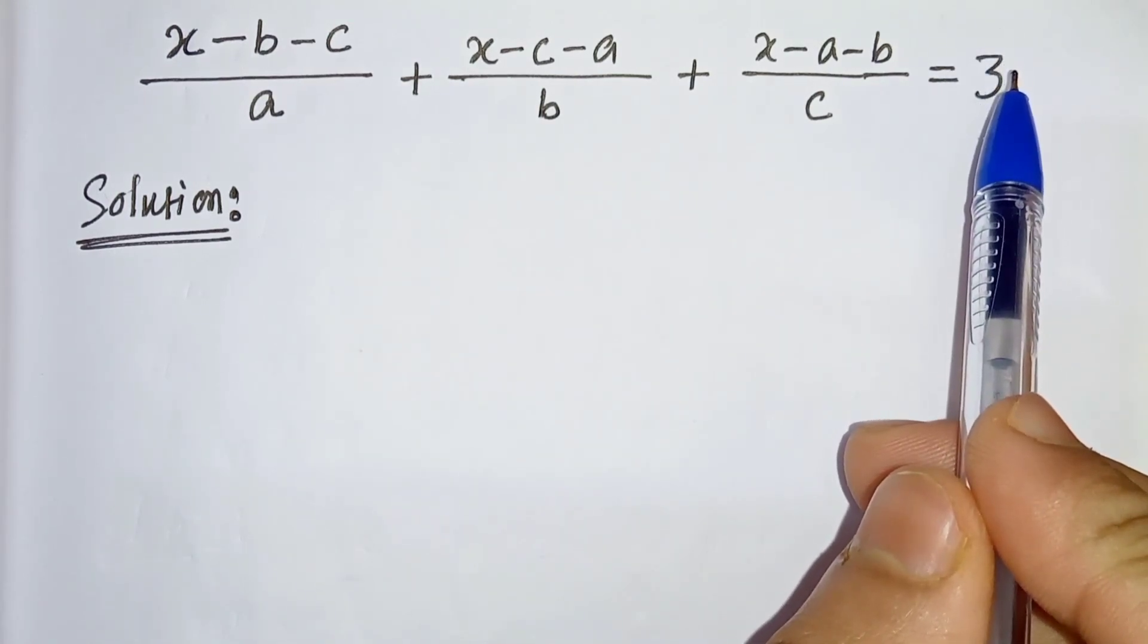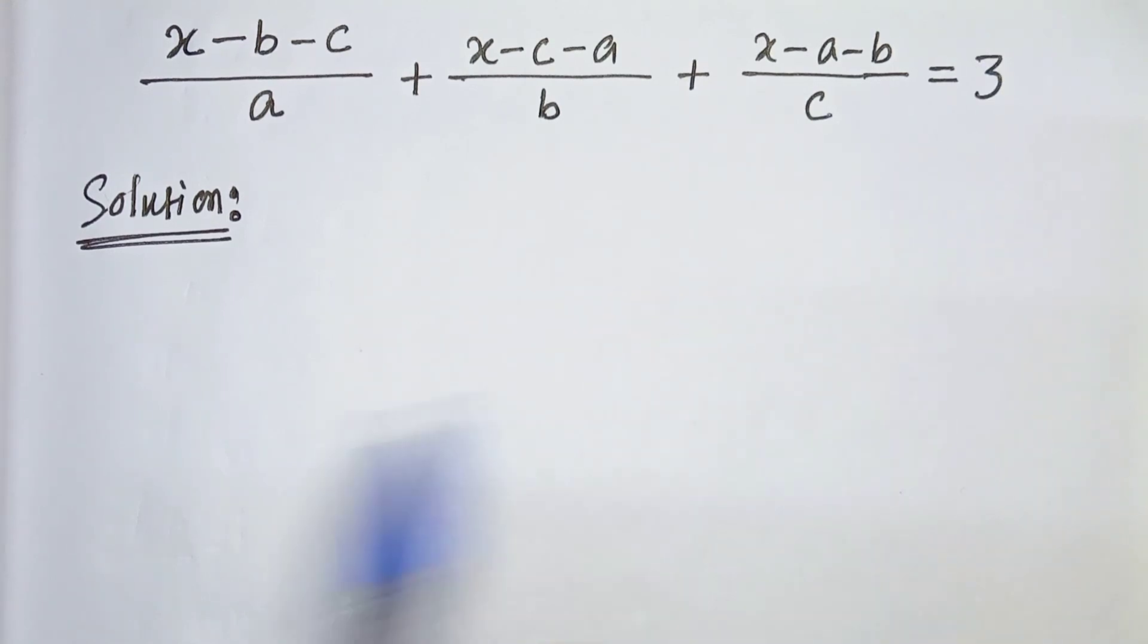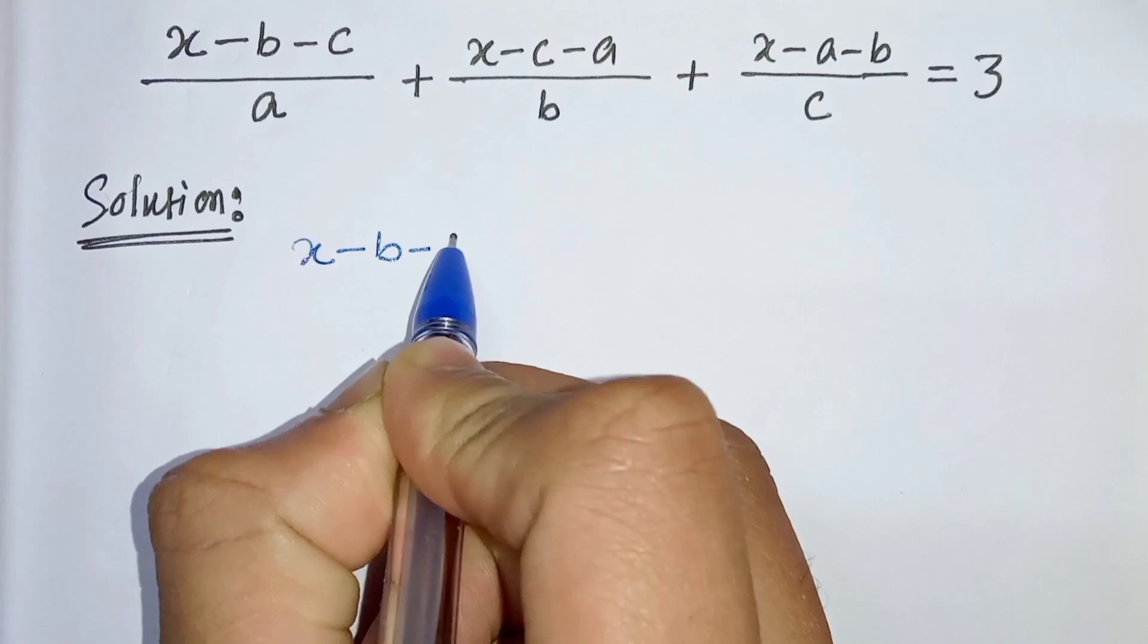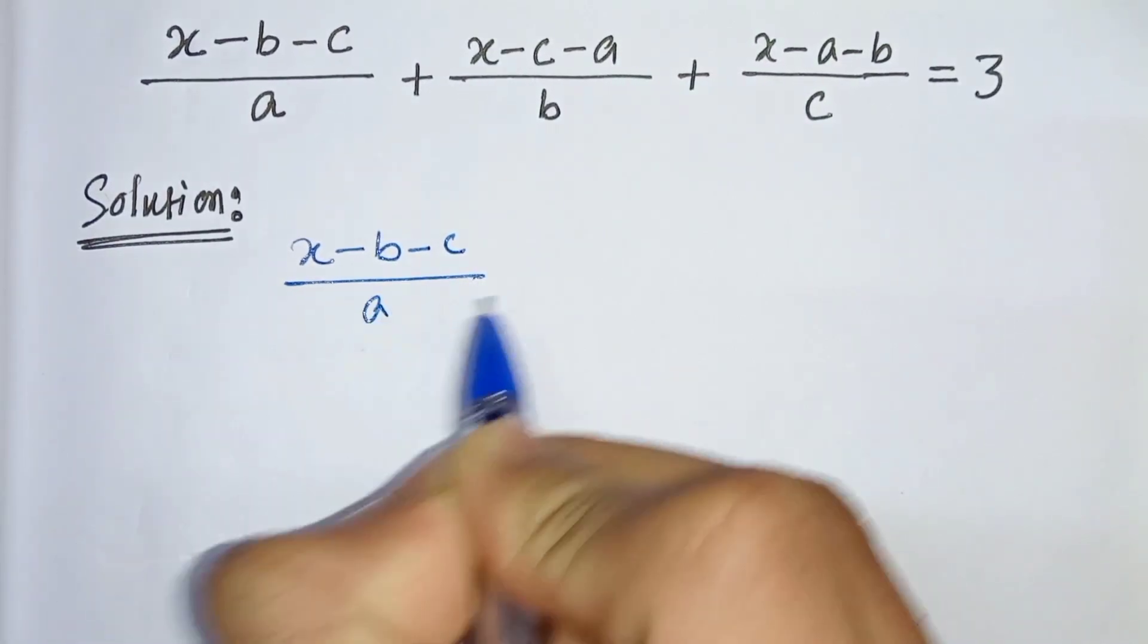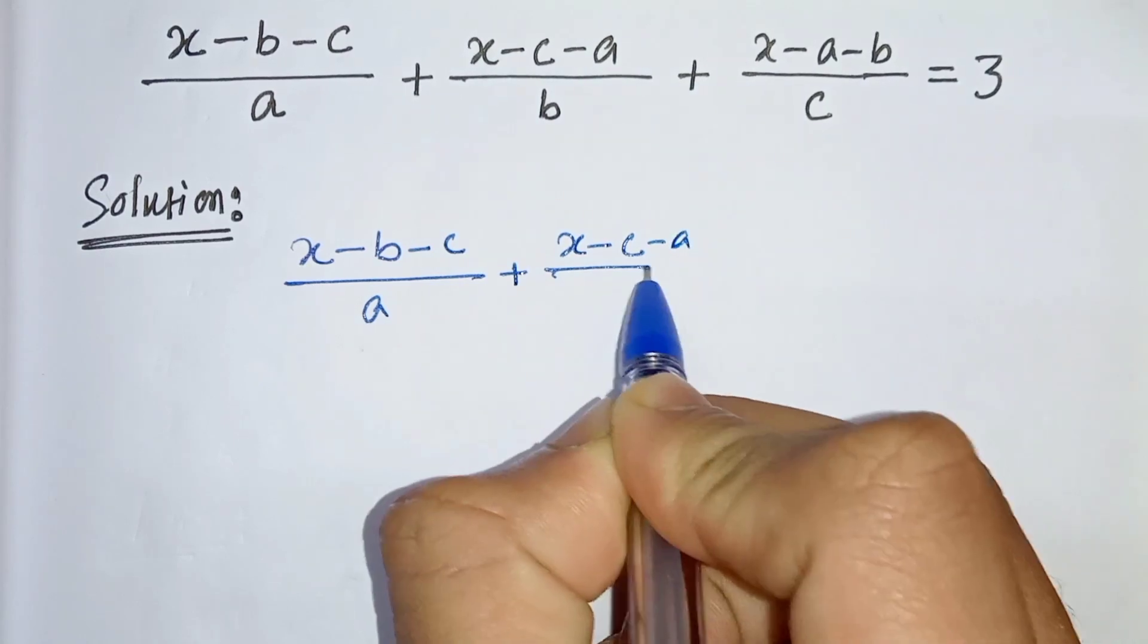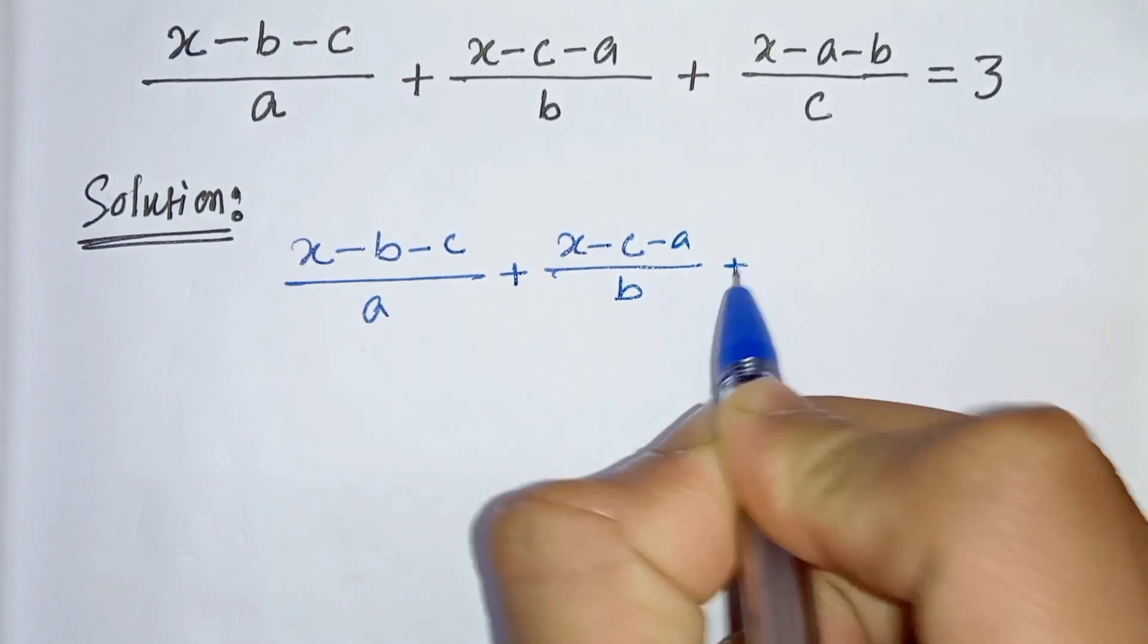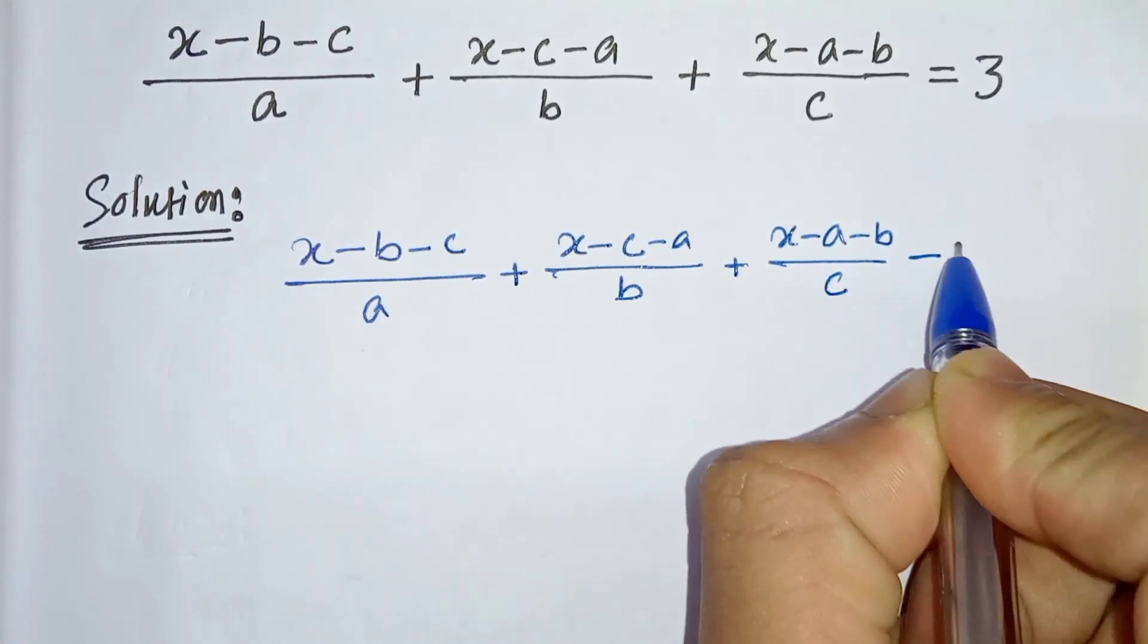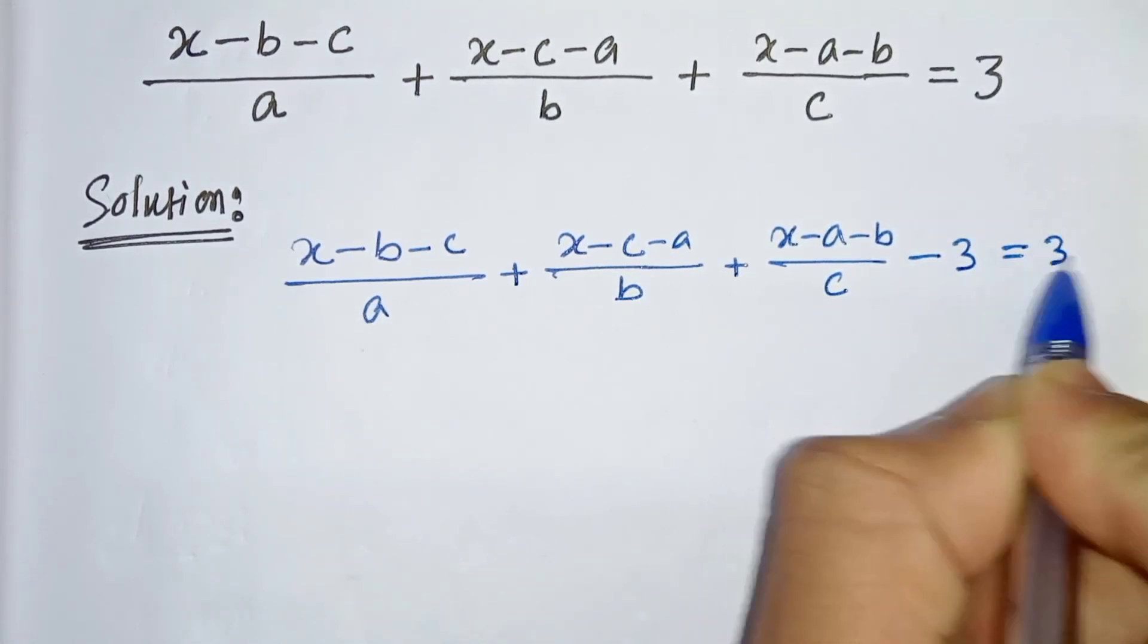So we will subtract 3 from both sides. x minus b minus c divided by a plus x minus c minus a divided by b plus x minus a minus b divided by c minus 3 and 3 minus 3.